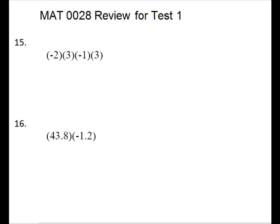15 and 16 are both multiplication problems. So we will count the negatives. Odd number of negatives, negative answer. Even number of negatives, a positive answer. 15 is just a multiplication. That's what parentheses side by side mean. So we'll just go across. I'm going to ignore the signs for now. 2 times 3 is 6. Times 1 is still 6. Times 3 is 18. Now I'm going to count the negatives. 1, 2. That's even. So it will be a positive 18.